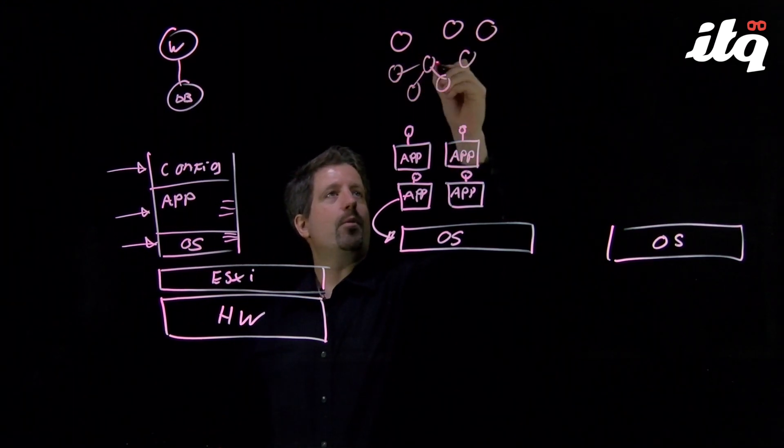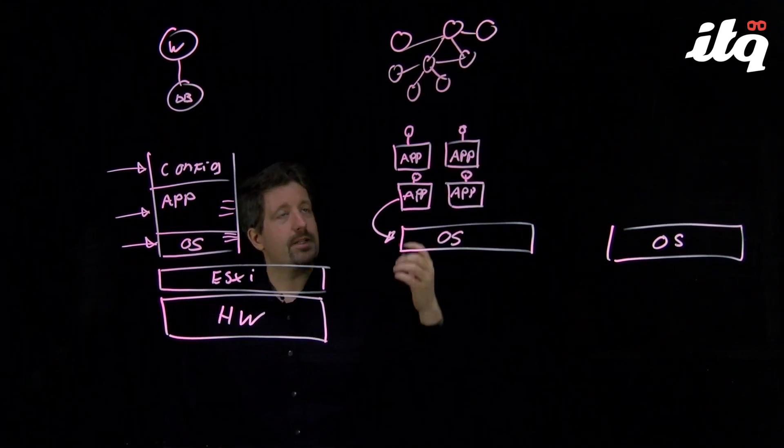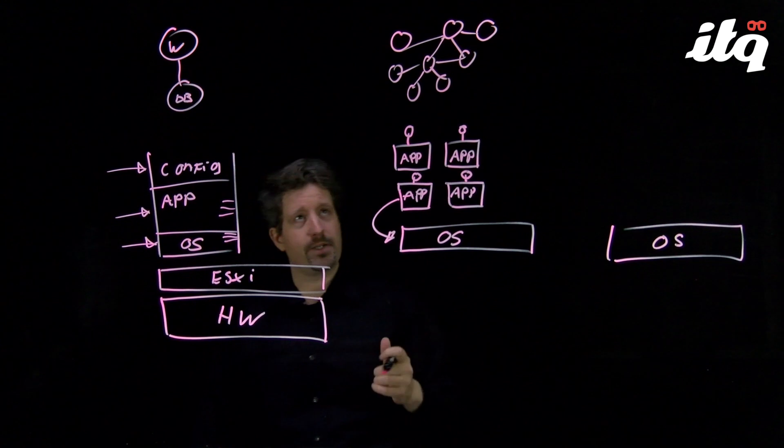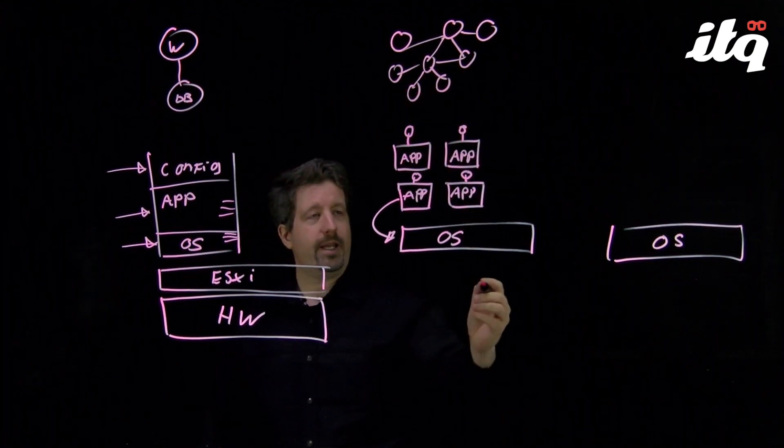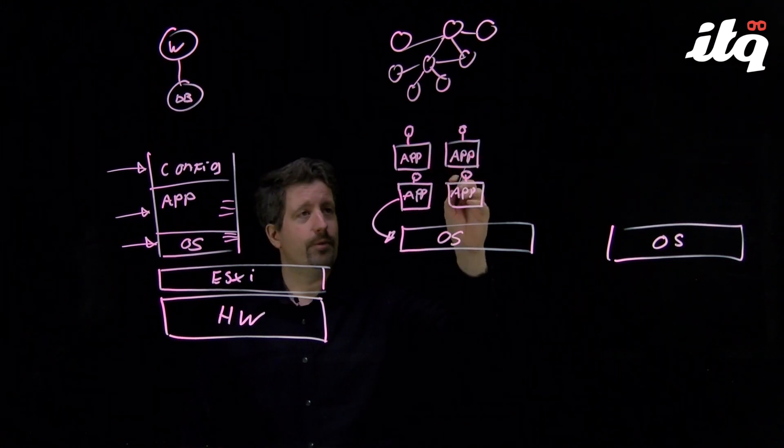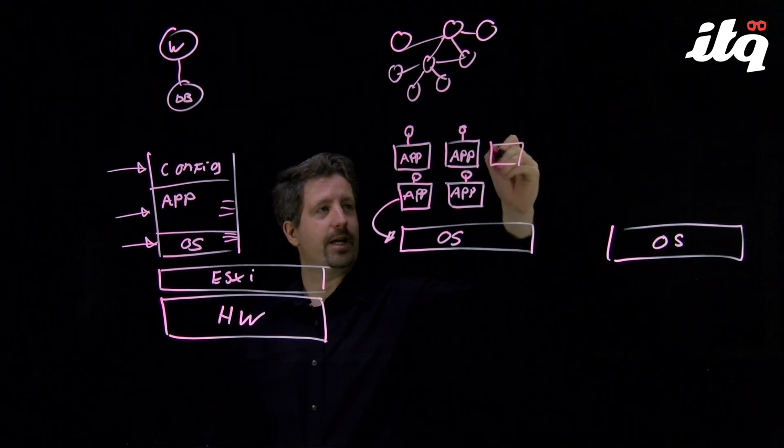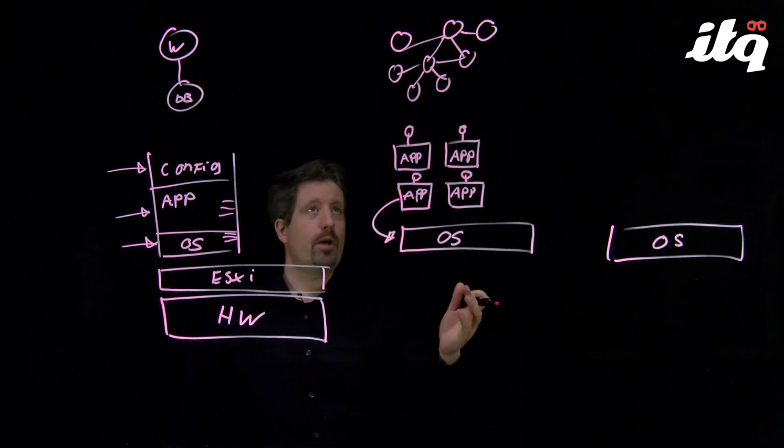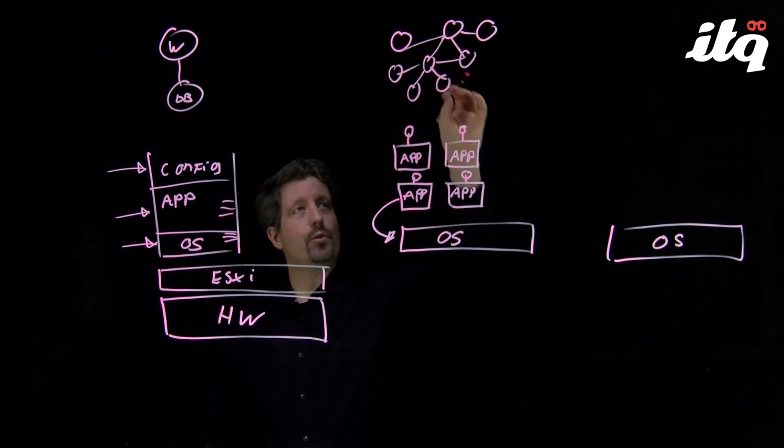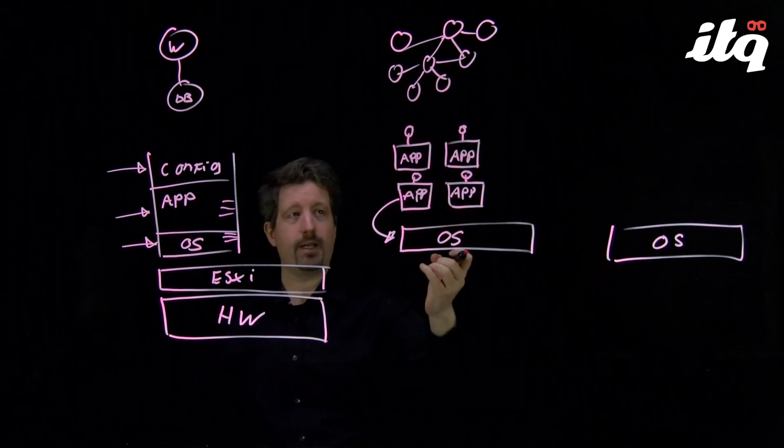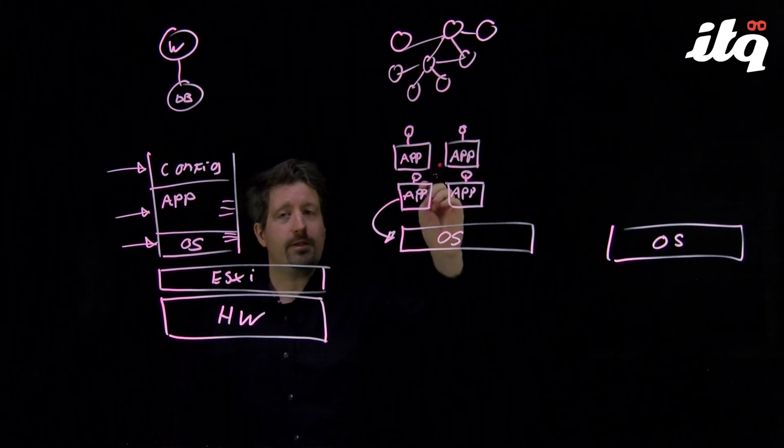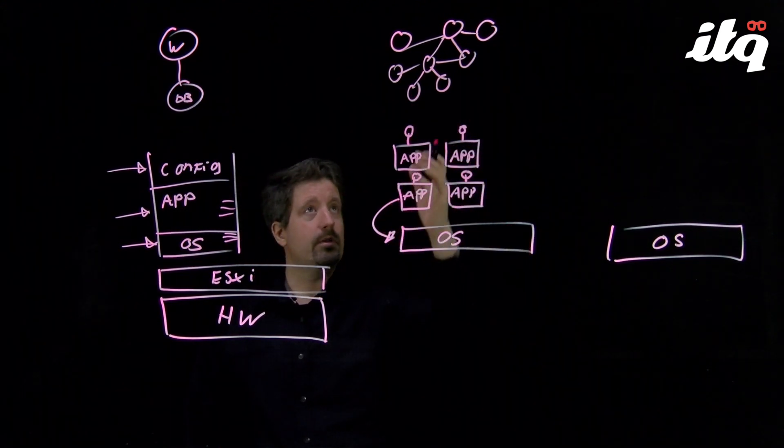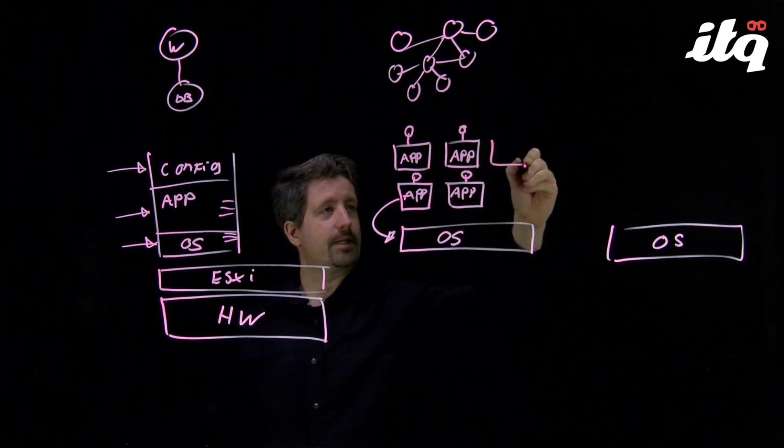This lends itself extremely well to container technology because it allows each part of our microservices architecture to be delivered in the form of a container. It also means that we can scale the different parts of our application extremely easily. If we need a middleware component to have more capacity, we can simply instantiate more of the same type of container that runs that particular service. Containers allow us to scale out the particular parts of our application extremely quickly and efficiently.